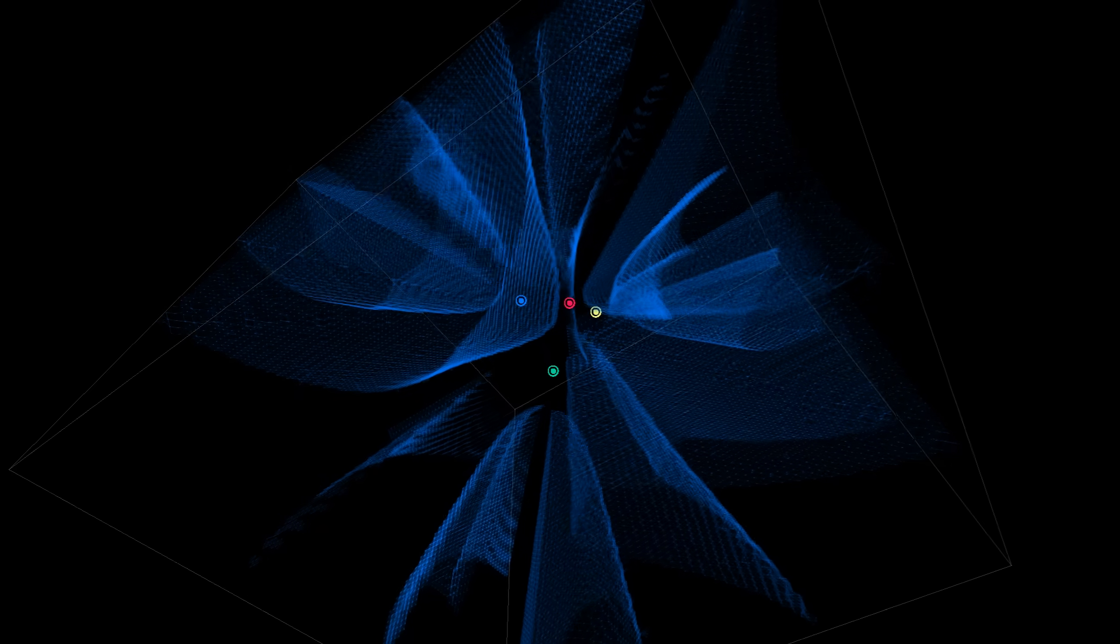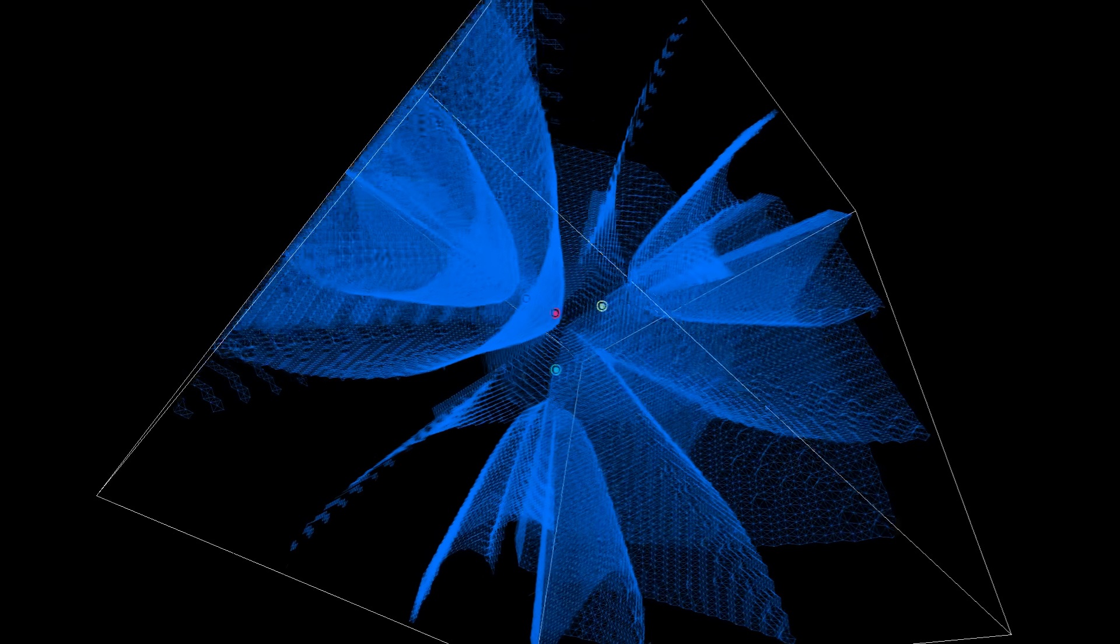We can try the same thing in 3D, too. I've picked four tetrahedrally arranged points. This shape in blue is the boundary of the area which converges towards the blue planet.